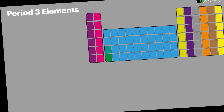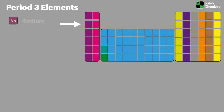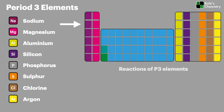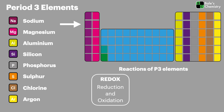Period three elements run from sodium in group one all the way across to argon in group eight. It's the main period we focus on and we've already looked at some of the properties of period three elements in the first year of this course. When period three elements react they conduct redox reactions, meaning both reduction and oxidation processes take place.